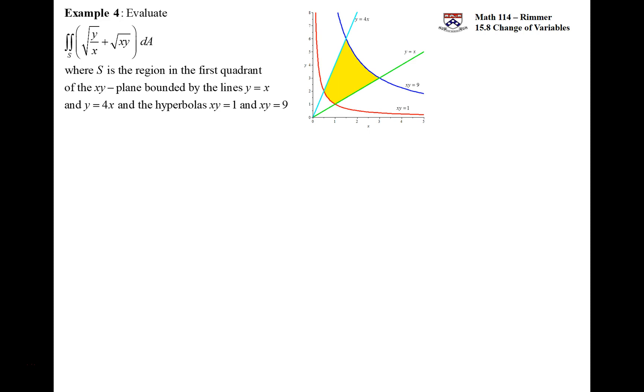Then y equals x is the green, and y equals 4x is the light blue color there. So our region is bounded by those four curves in the first quadrant—the yellow region there, that is S. What we want to do is change this, because this is going to be too difficult if we do dx dy or dy dx. It's going to be multiple integrals, too much work. So we want to change variables.